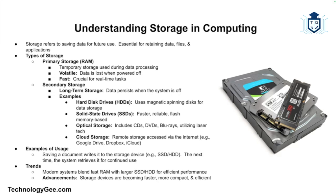The second type is secondary storage — long-term storage where data is kept even when the system is turned off. Examples include hard disk drives, which store data magnetically on spinning disks; solid-state drives, a faster and more reliable alternative that store data on flash memory chips; optical storage such as CDs, DVDs, and Blu-ray discs, which use laser technology; and cloud storage, where data is stored on remote servers accessed over the internet — examples include Google Drive, Dropbox, and iCloud.